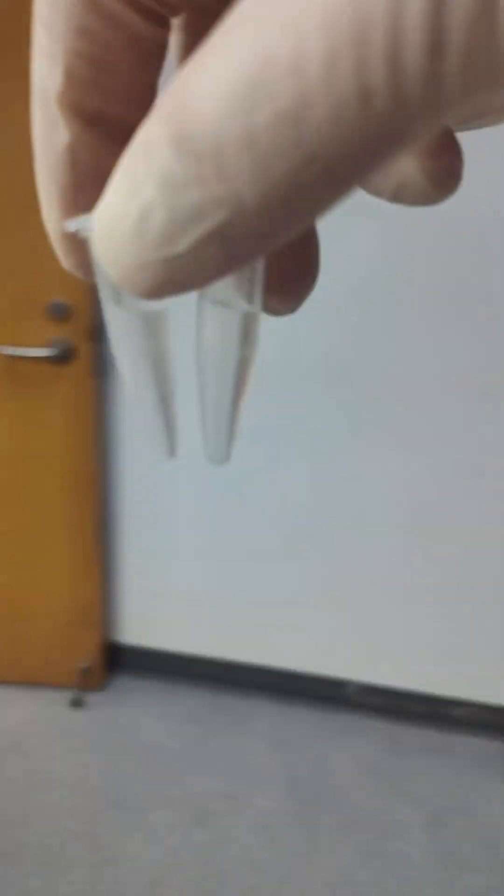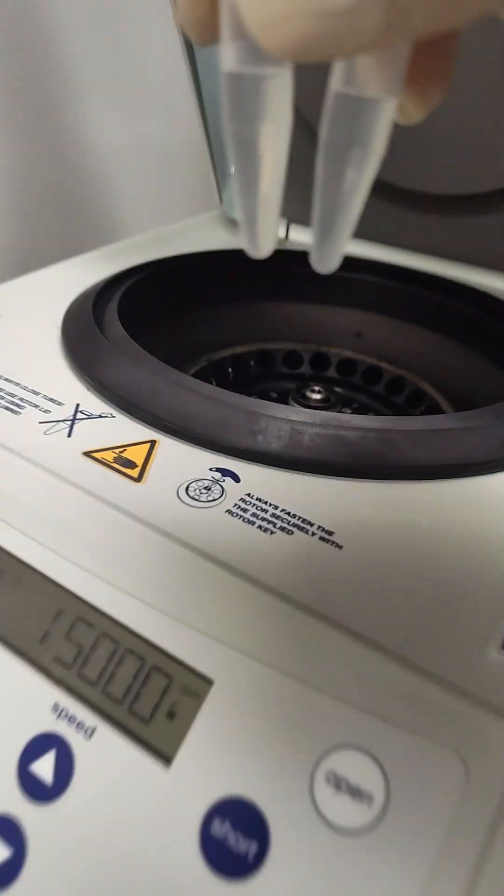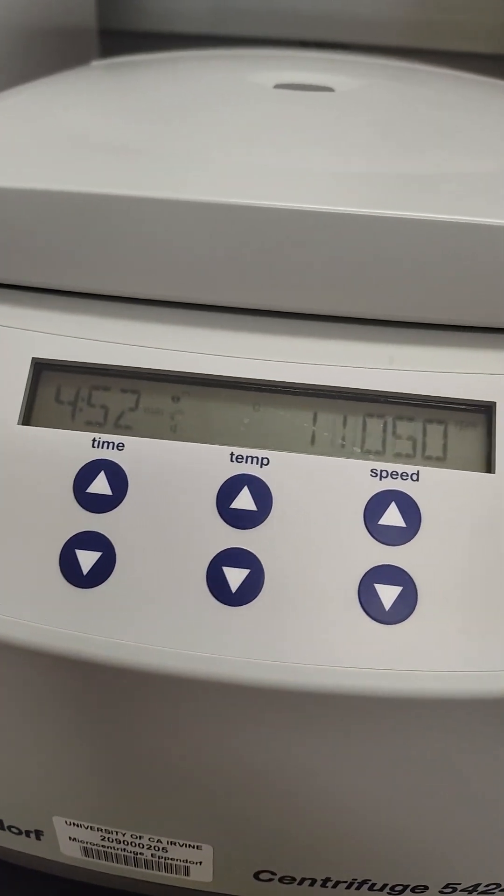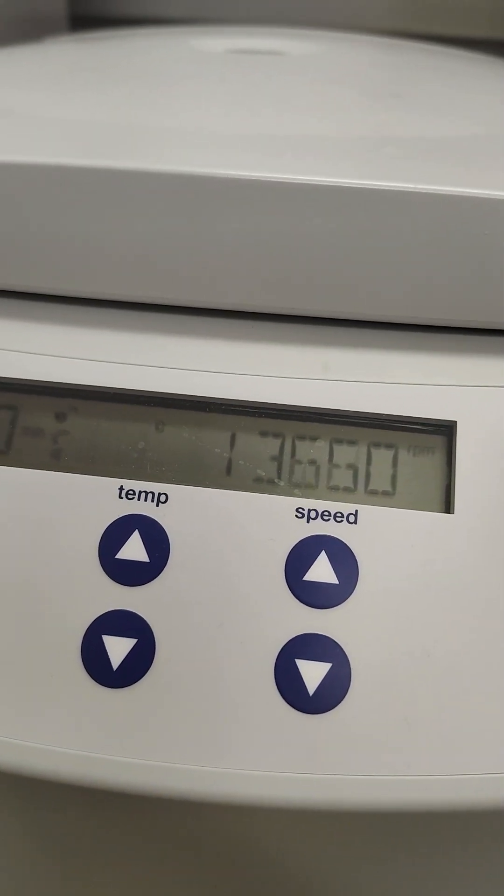Another dilution. We'll try spinning it out. A little bit more water this time. Alright then we're going to spin it out longer. Five minutes. 15,000 RPM.